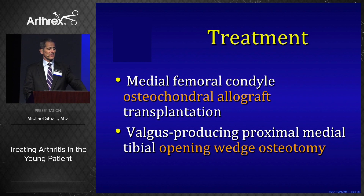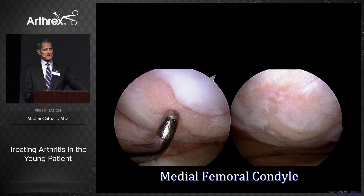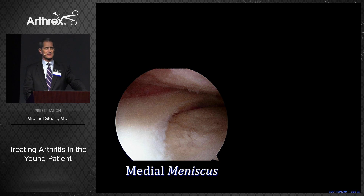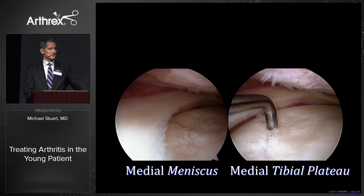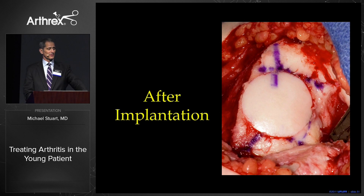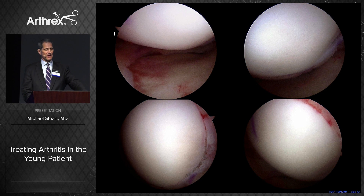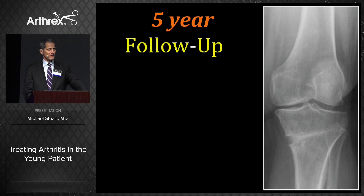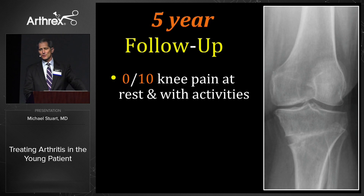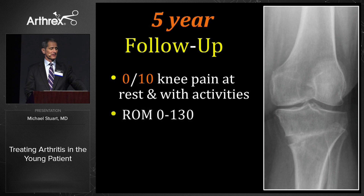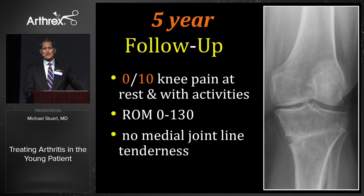We elected to do a medial femoral condyle osteochondral allograft transplant combined with a valgus-producing proximal medial tibial osteotomy. You can see complete loss of articular cartilage and intralesional osteophytes from previous microfracture. She has some tibial changes but fortunately has an intact medial meniscus. I can't bring myself to take out that meniscus and viable articular cartilage in a 31-year-old. We restored hyaline articular cartilage with a very large graft and realigned the limb. At five-year follow-up, she has no pain, improved joint space, symmetric range of motion, and no tenderness. It won't be difficult to convert this to an arthroplasty when she's older.